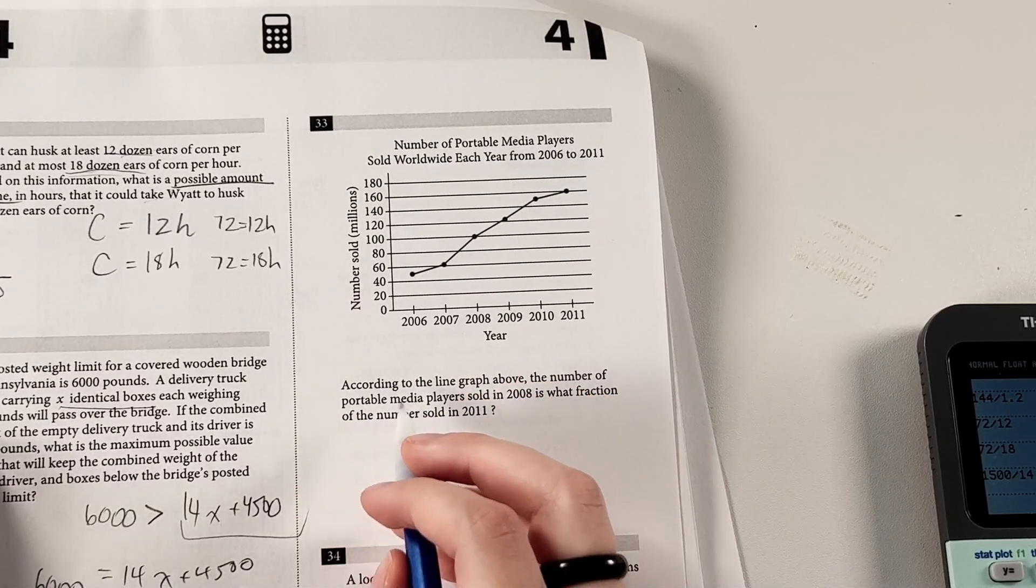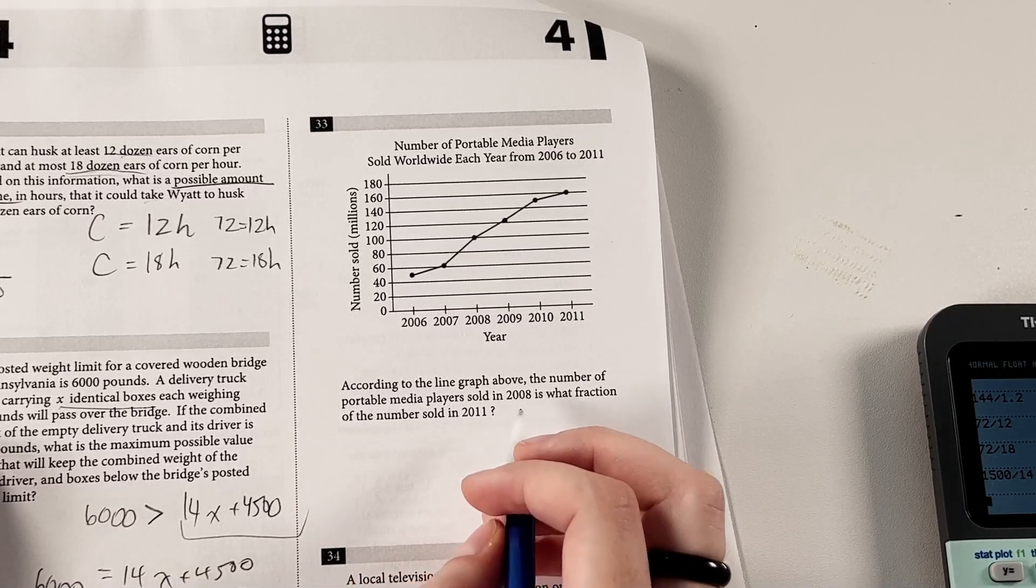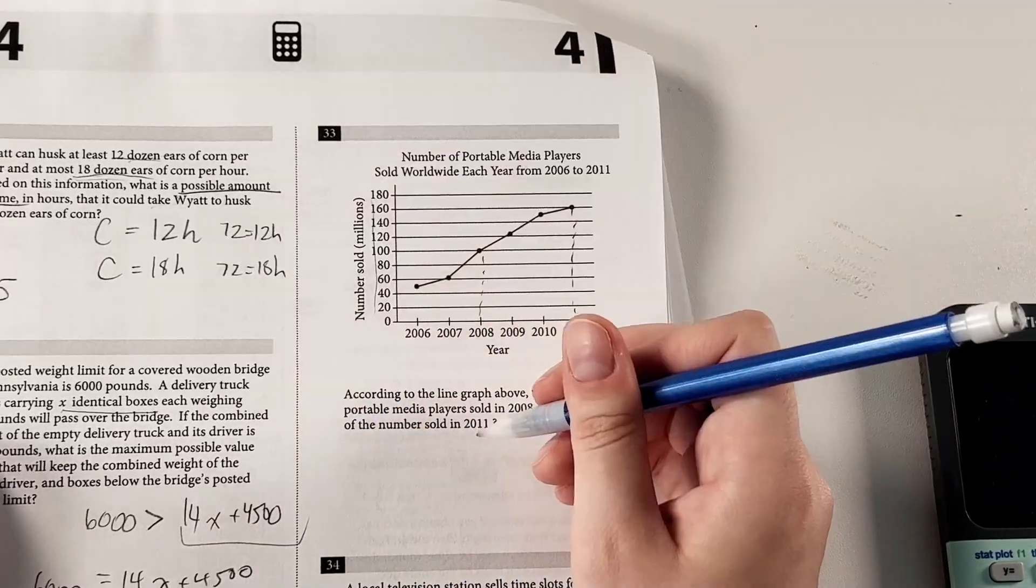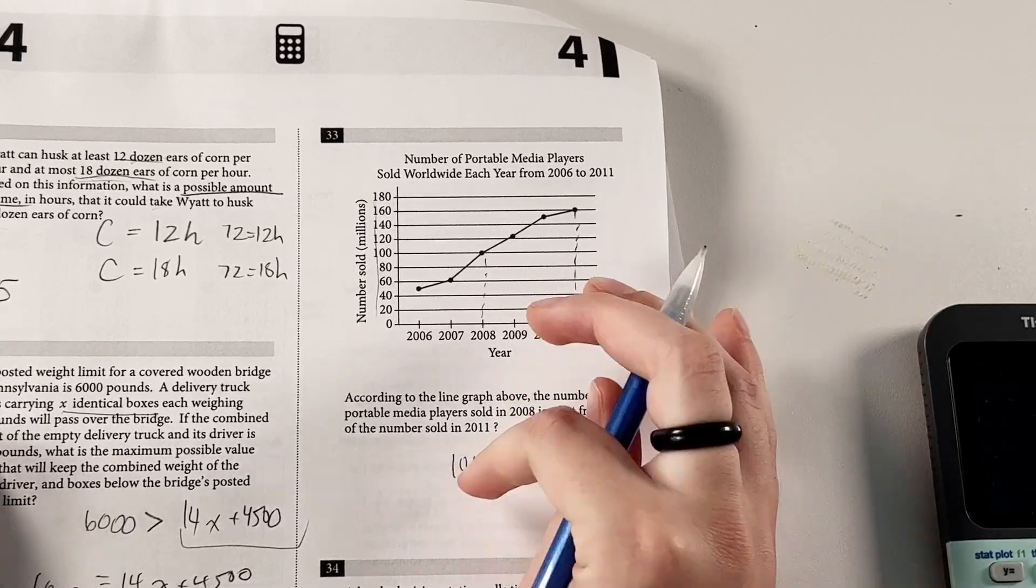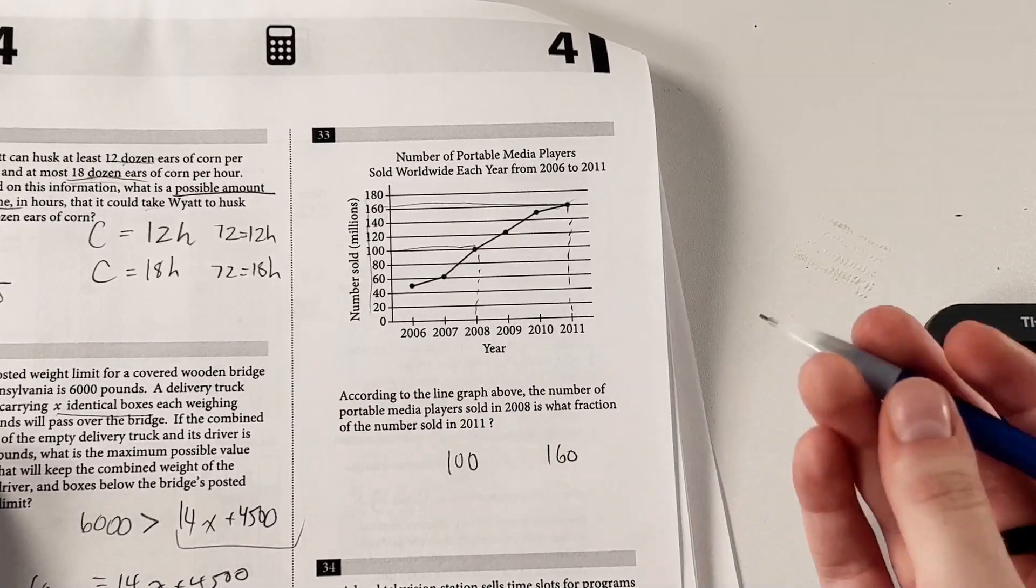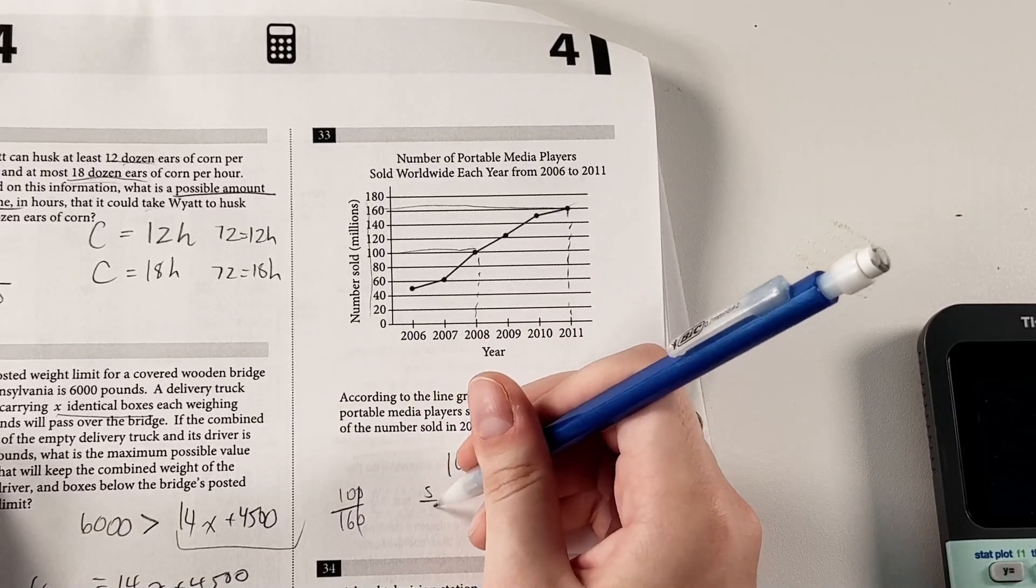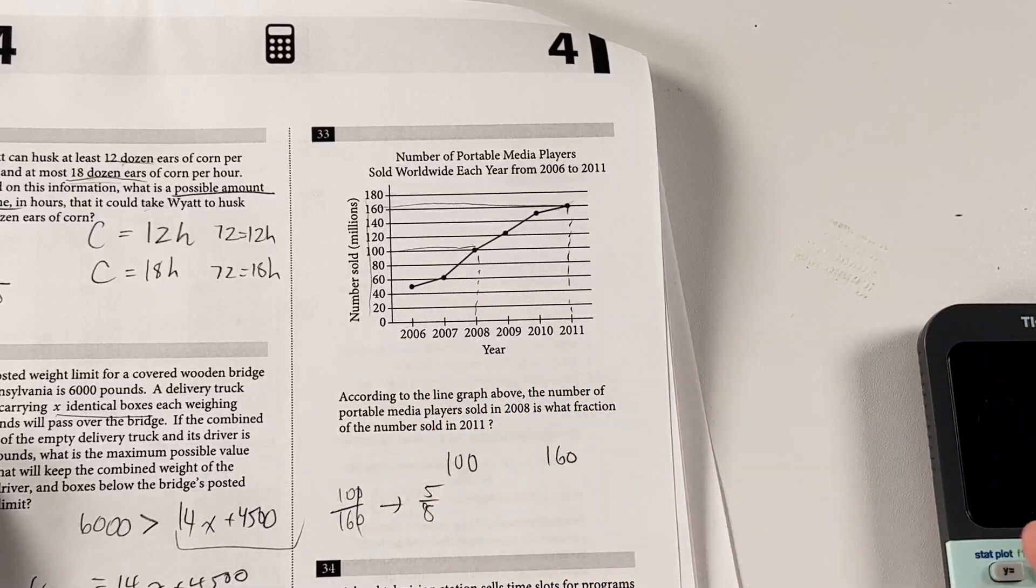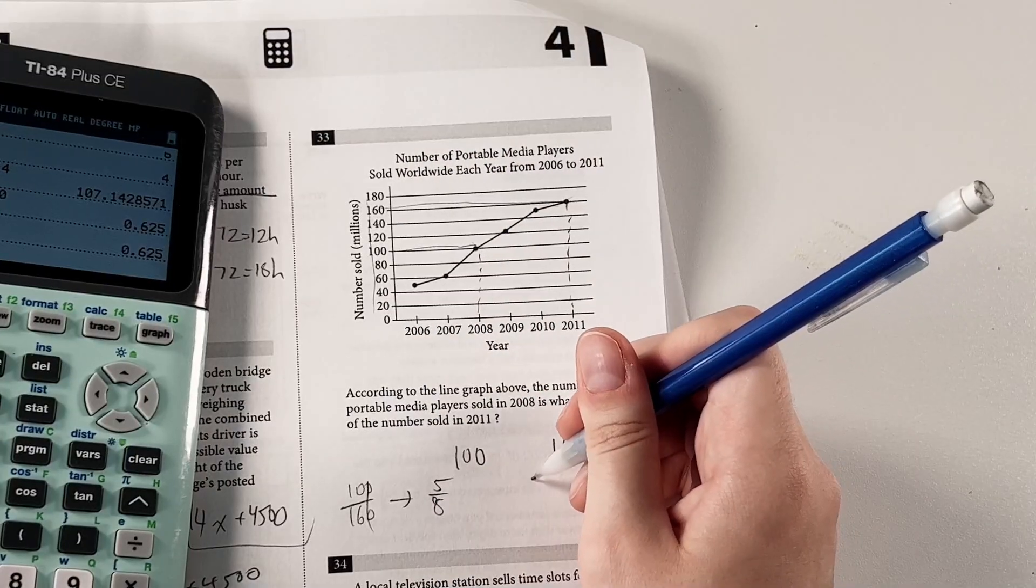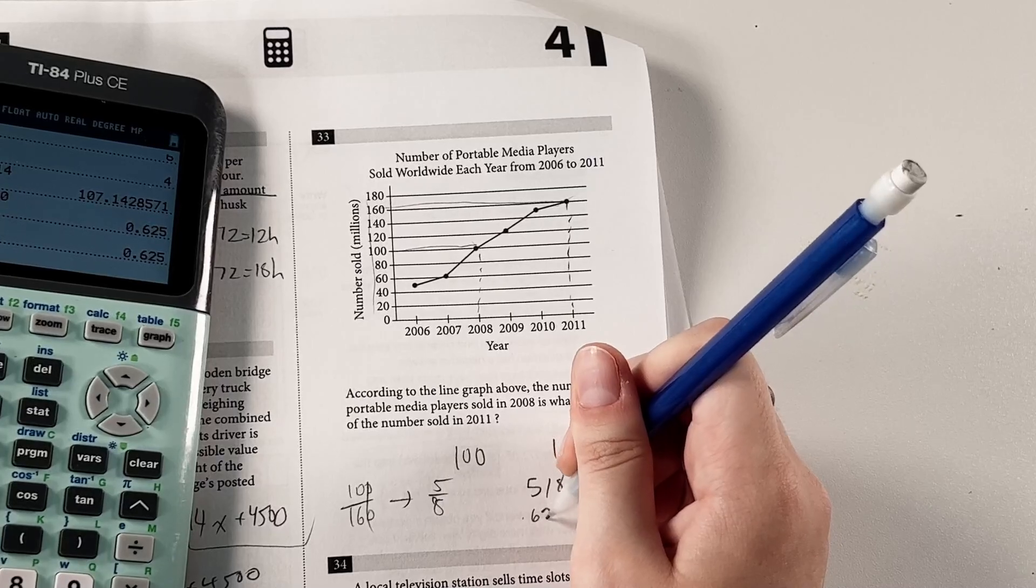According to the line above, the number of portable media players sold in 2008 is what fraction of the number sold in 2011? So these are the two values we're looking for, and these are the numbers sold in millions. In 2008, there were 100 million sold, and in 2011, there were 160 million sold. So we can just divide these by each other since we're looking for the fraction. We don't even need our calculator for this. We can just simplify that to 5 eighths, or if you want, yeah, we get the same answer. So we can either bubble in 5 eighths, or 0.625, I believe.